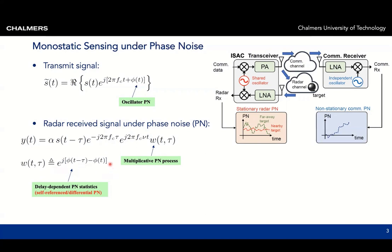This means that the phase noise will have delay-dependent statistics, as shown on the right. We show two phase noise trajectories as a function of time. If a target is nearby, tau is very small, meaning these two phase noises — phi of t minus tau and phi of t — will be very similar, so the overall phase noise is very small, shown in red. On the other hand, when a target is far away, these two values will be very different and we will have a lot of phase noise.